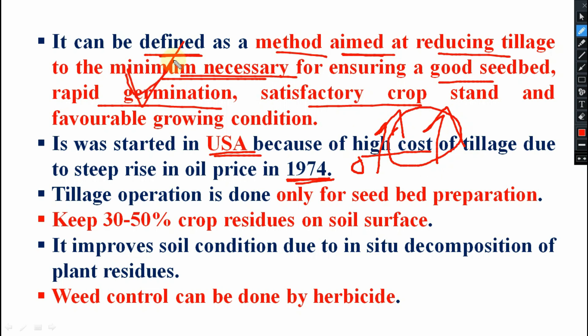To prevent these high input costs, minimum tillage has been adopted. Tillage operations are done only for seedbed preparation — nothing else — keeping 30 to 50 percent of crop residues on the soil surface.